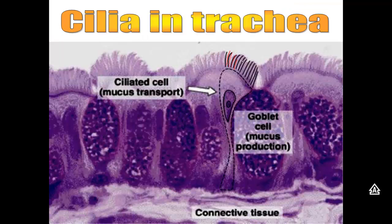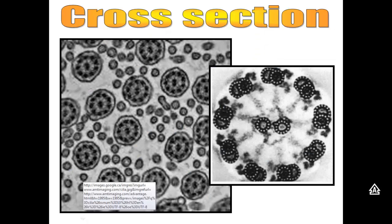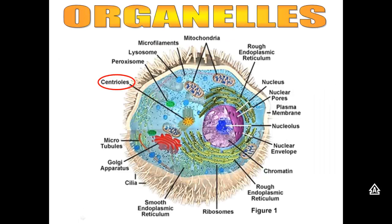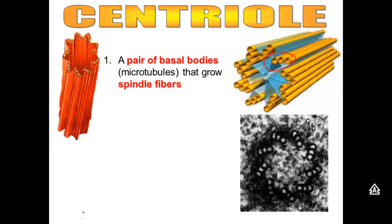Here's a picture of some cilia inside the trachea — they help move dirty mucus outside of the lungs back to the back of your throat. Here's a sperm cell with the flagella that helps it swim to the egg. Here's a cross section of the cilia showing the pairs of tubulin. Microtubules also make centrioles — you'll recognize them as star-shaped organelles with tubulin in groups of threes.